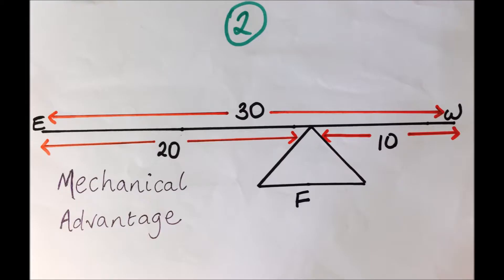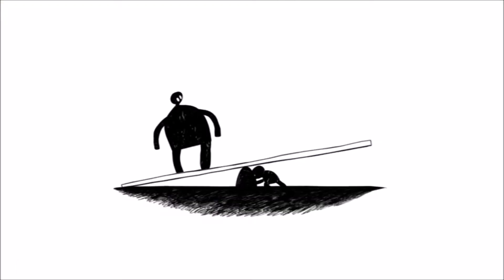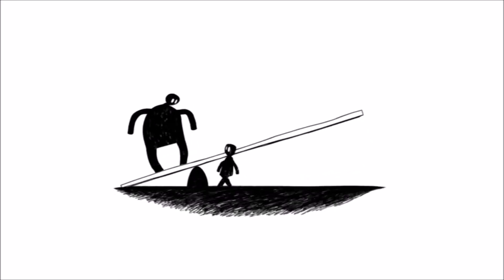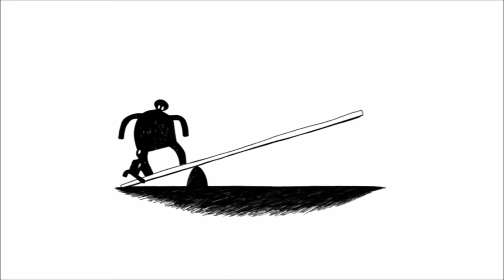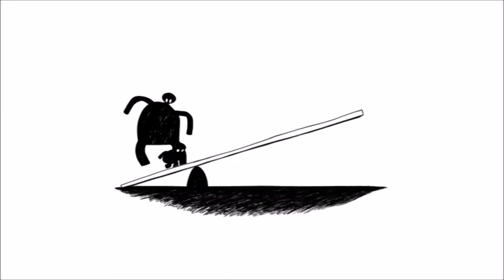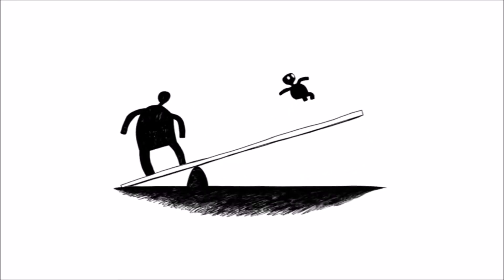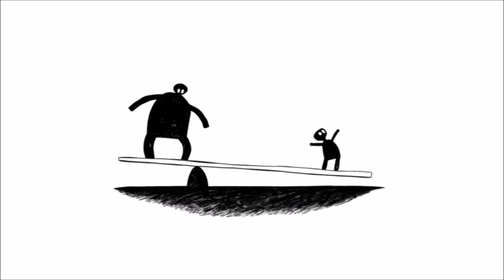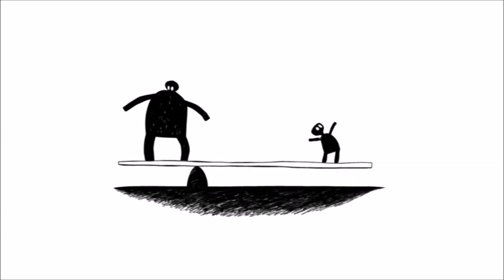The fulcrum may be situated closer to the weight, making the weight arm shorter than the effort arm. When the weight arm is shorter than the effort arm, less effort will be required to lift the weight, and this is called mechanical advantage.